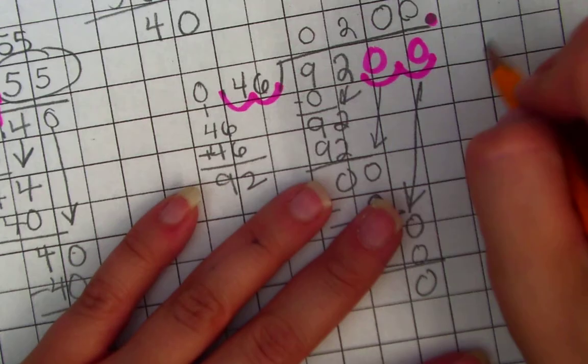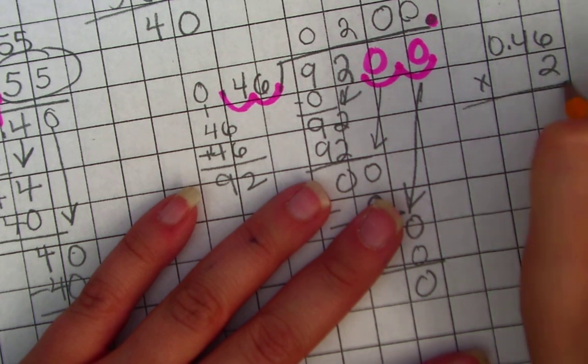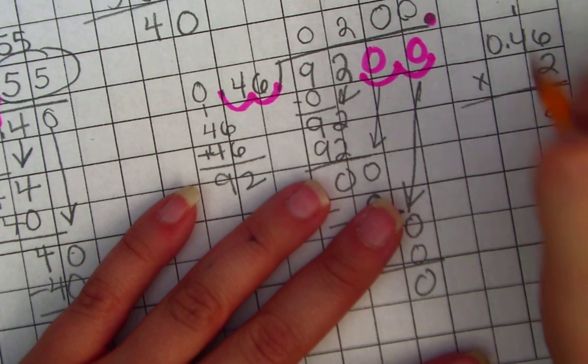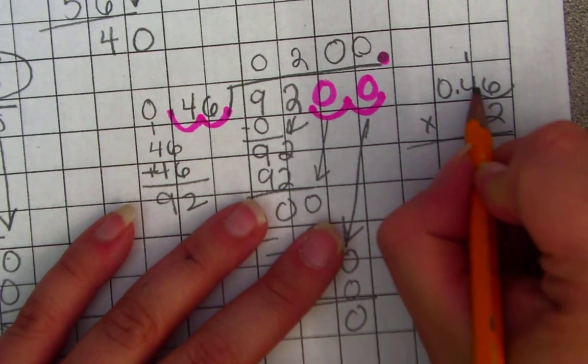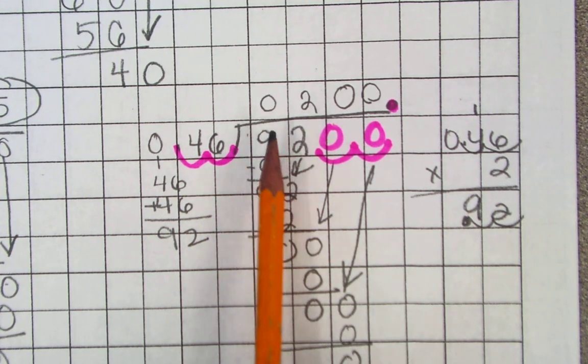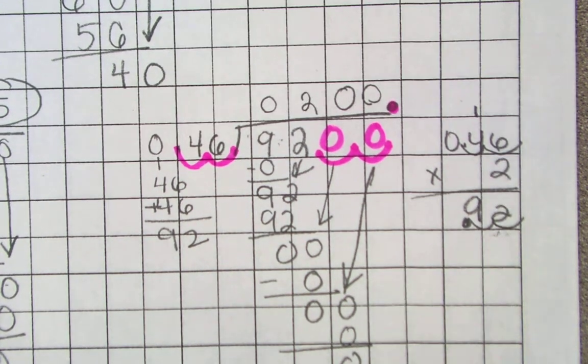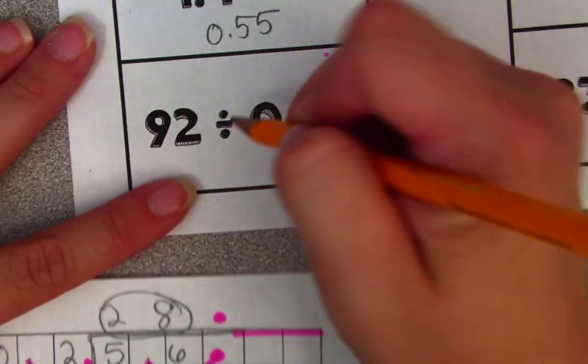It can't be 2. Because if it was 2, it was 0.46 times 2. That's 12. Trade your 1. 8, 9. That's 9. But if it was just 2 and not 200, I count over two spots and it would be 0.92. But that's not what I divided. I divided by 92, not 0.92. So I needed to make sure that I did it correctly. So my answer over here is 200.